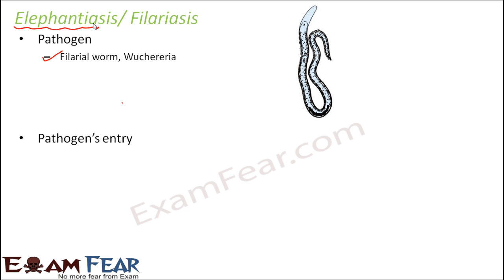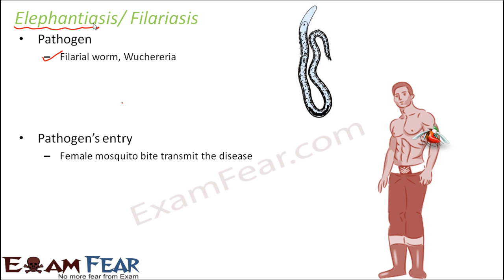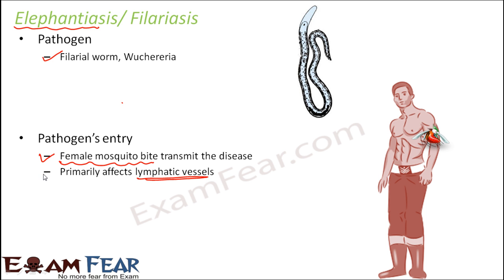The filarial worm enters the body through the bite of a female mosquito, which acts as the transmitting agent — similar to malaria. It primarily affects the lymphatic vessels, causing them to swell. The lymphatic vessels become so swollen that the entire affected part of the body gets severely swollen.